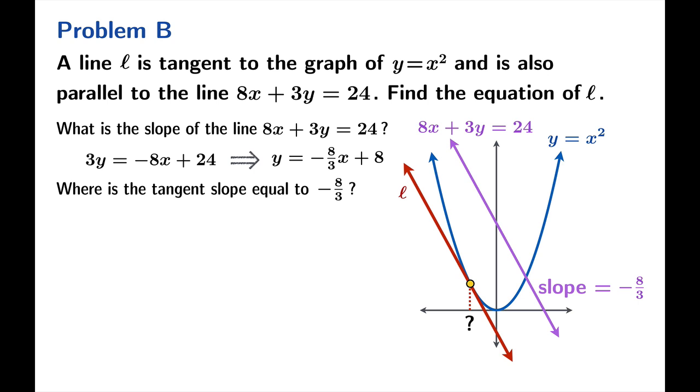So the way we could ask this question is: where is the tangent slope equal to negative 8 thirds? In other words, for what x is it true that 2x is equal to negative 8 thirds? Why 2x? 2x is twice x. That's the tangent slope at x. So we want to solve the equation 2x equals negative 8 thirds. But that's just negative 4 thirds.